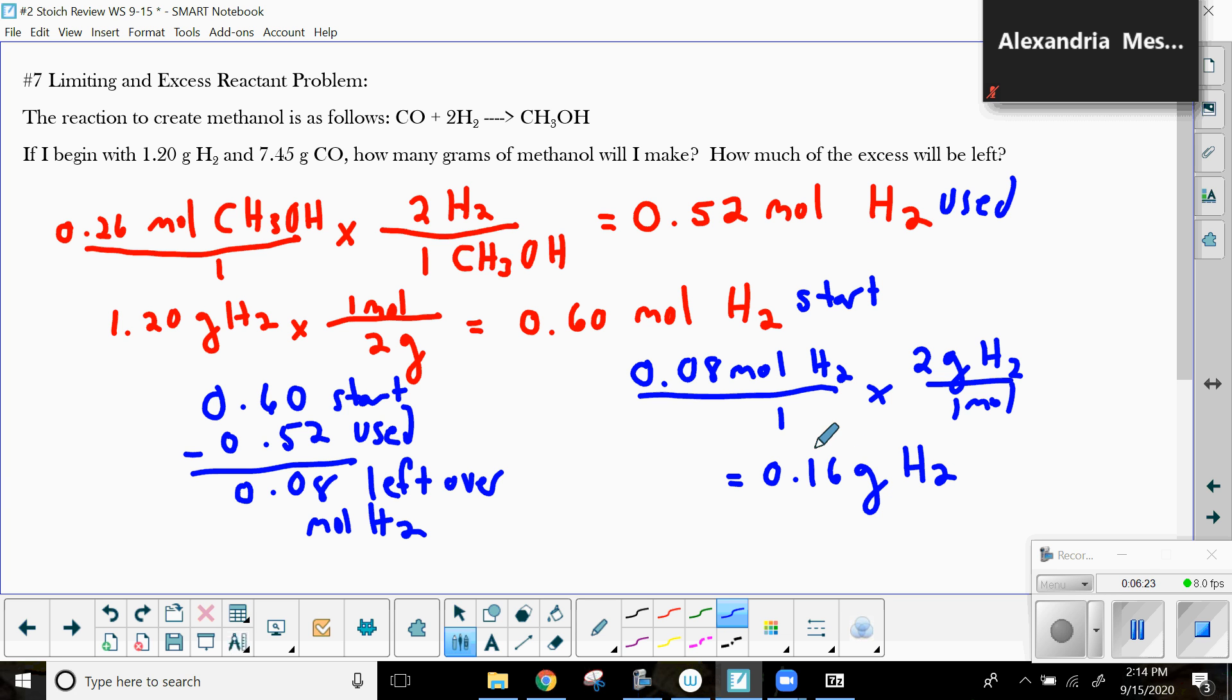Now, just to let you know here, I did a horrible job with sig figs. But also, the answer sheet said 1.26. So, I think there was a typo there. So, it's 0.16. So, there's limiting and excess reactant problem, formalized a little bit more. If you have any further questions, please don't hesitate to reach out. See you later.